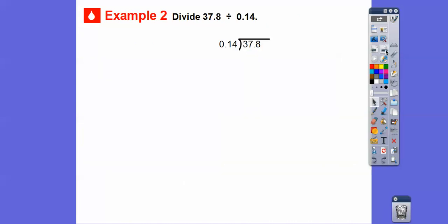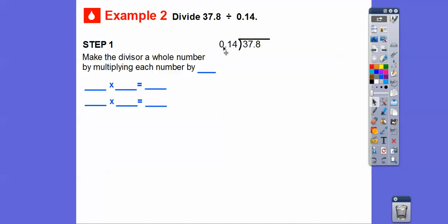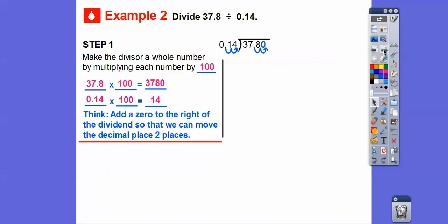Let's divide 37.8 divided by 0.14. We're going to make the divisor a whole number. Since we've got to move this over two places, we're going to multiply this by 100. When we multiply 0.14 times 100, it gives us 14. But we've got to multiply this dividend also by 100. So that's going to move this decimal over two places. We're going to have an empty space, so we add a 0 to the right of the dividend. Now let's divide 14 into 3,780.